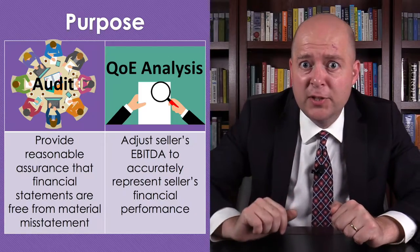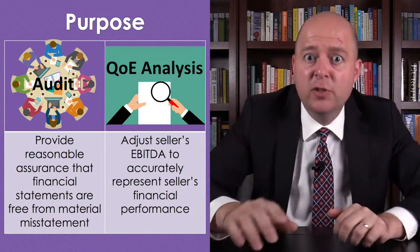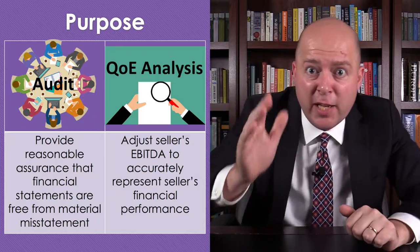The purpose of a quality of earnings analysis, on the other hand, is to adjust the seller's EBITDA so it accurately reflects the financial performance of the seller. For example, it's possible that 90% of the seller's EBITDA was attributable to a one-time gain that's not going to recur. If you're the buyer, you'd want to know this because it affects the price you're willing to pay for that company. But an auditor isn't going to raise any issues about this, provided that the company's financial statements conform to the relevant accounting standards.